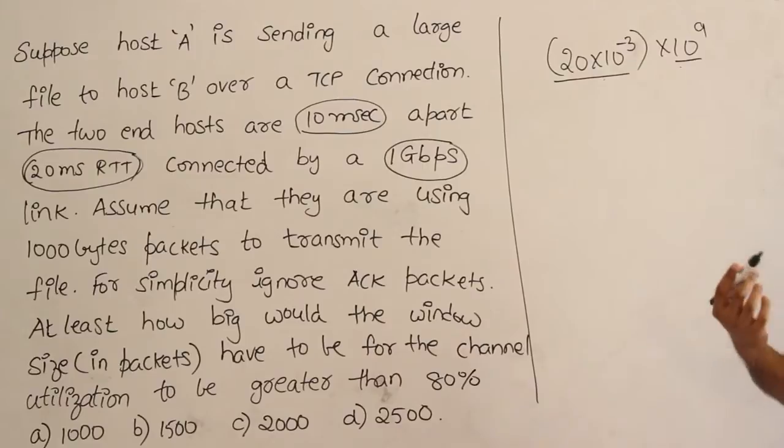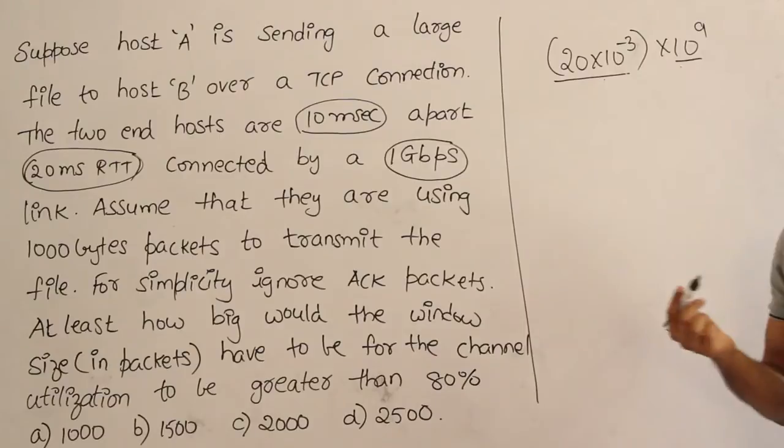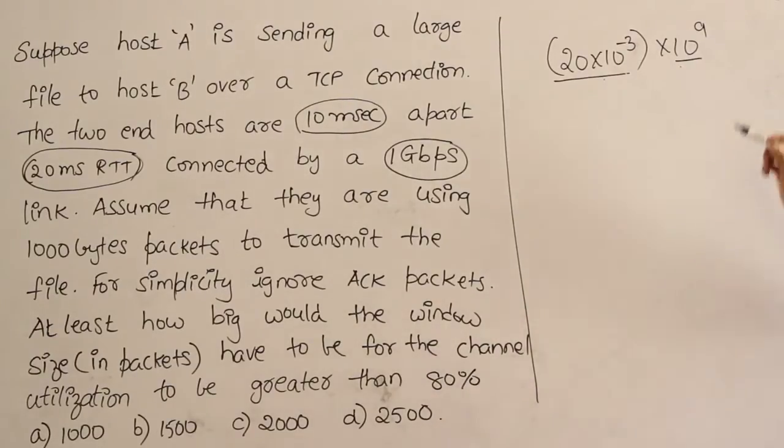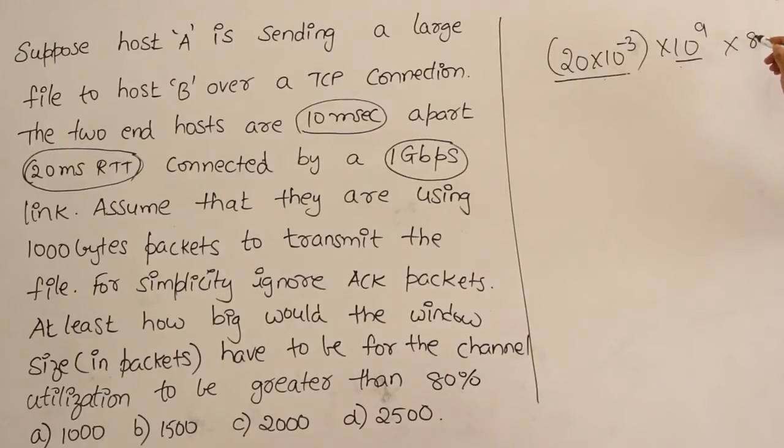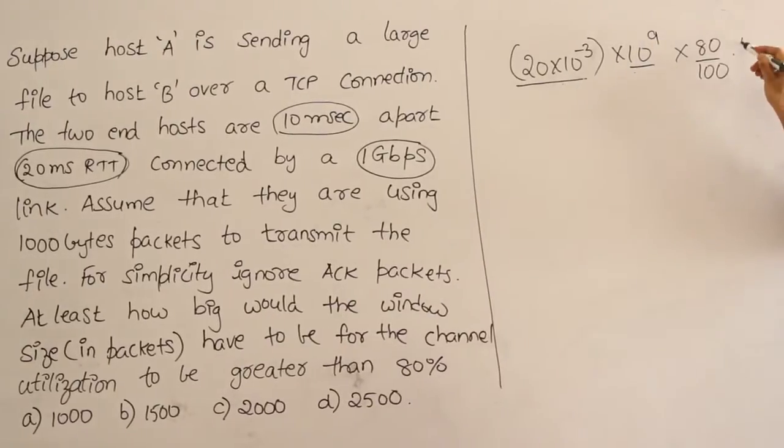Therefore for 100% utilization the window size should be these many bits. But they are saying that utilization need not be 100%, it has to be 80%. Then what is it? 80% is 80 by 100. So this should be the size of the window in bits.